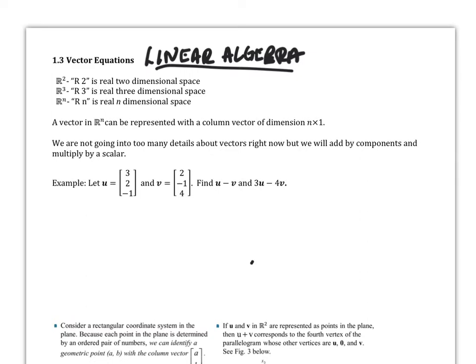So if we have a vector u, like this, we can write it in a column vector, 3, 2, negative 1. So this would be in three-space, and then vector v would be 2, negative 1, 4.